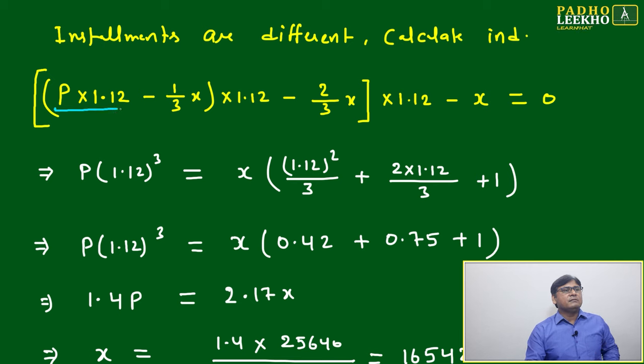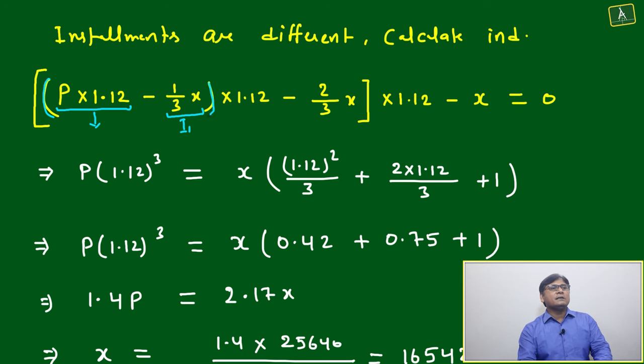First, after one year, the principal amount will convert into P times 1.12, because the rate of interest is 12%. No doubt the amount will convert this one. Now after one year, you have paid the first installment, that is your 1/3 X. What will be the leftover amount? This will be under this small bracket.